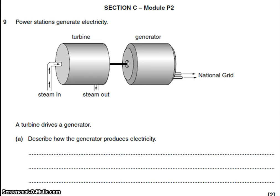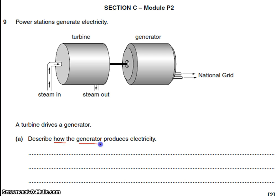This is the P2 section of the January 2013 paper. The first question is related to generating electricity, and a lot of students give fantastic answers about how a power station works — describing how fuel is burnt, water boils to produce steam, steam turns the turbine, the turbine turns the generator, and then it goes to transformers and the national grid. That isn't what the question is asking, though. The question is asking how a generator produces electricity — how a generator works in really simple terms.